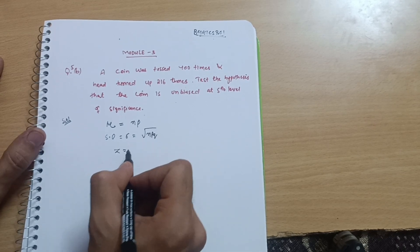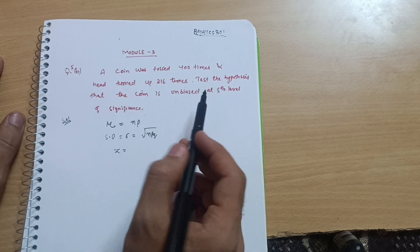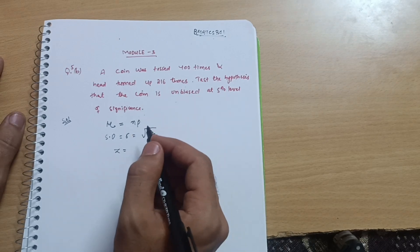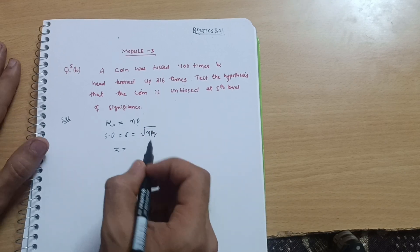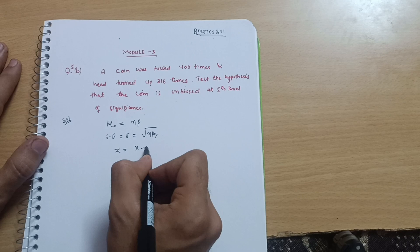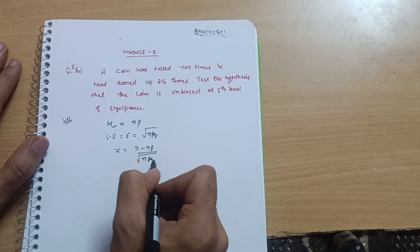Next formula is Z by which we can decide that the coin is unbiased or biased at 5% level of significance, whatever the level of significance is there. It may be 1%, but in this particular question it is 5% level of significance.